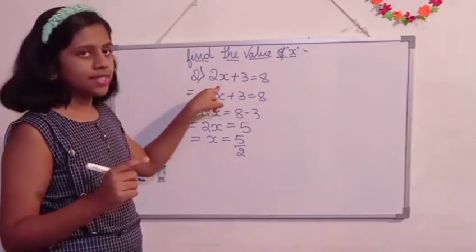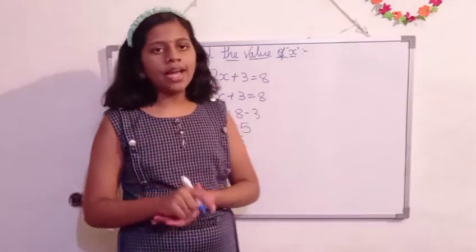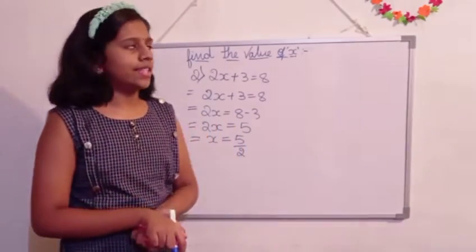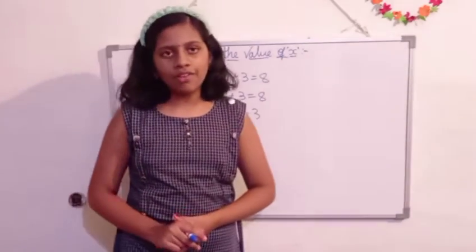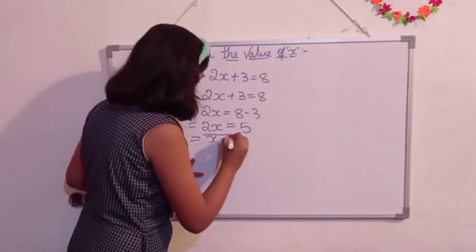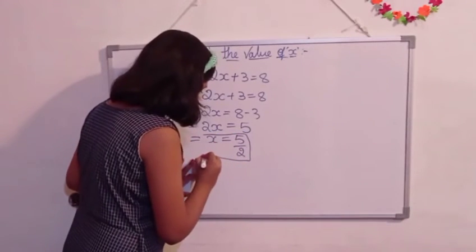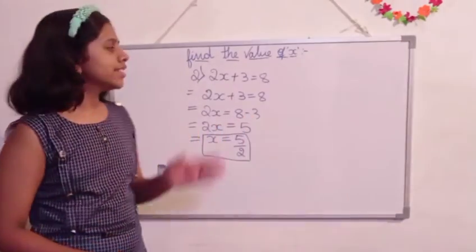So the value of x is x equals 5 by 2. We are going to replace the x by 5 by 2, the value. Got it? So x equals 5 by 2 is the answer for the second question.